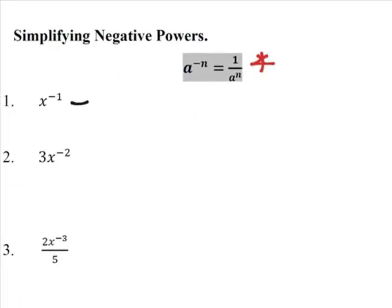The first one, you can see that n is 1, so it's just simply 1 over x to the power of 1, and we don't bother writing the 1 in.